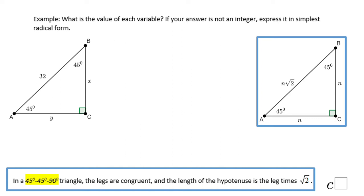Welcome back to I Need Help at C Squared. In this example we need to find the value of x and y. You notice x and y are the legs of this right triangle.